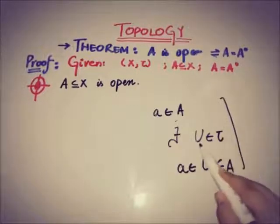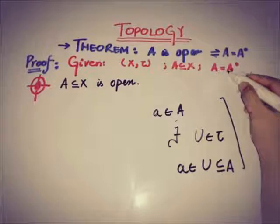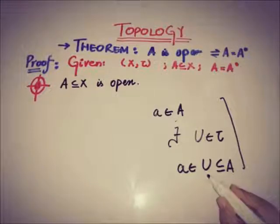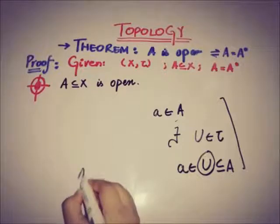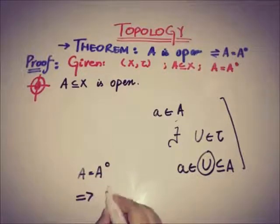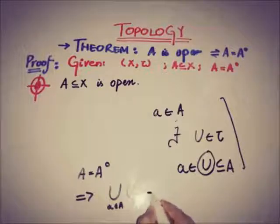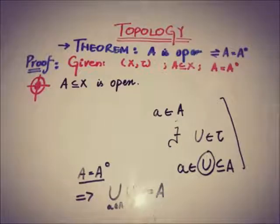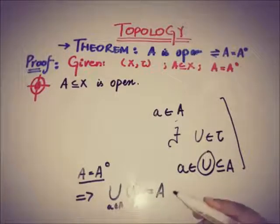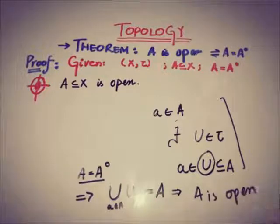Since A is said to be an interior point when there exists an open neighborhood U with U a subset of A containing point a, and given that A equals its interior, taking the union of all such open sets gives us A. This means A is the union of arbitrary open sets, and since the union of open sets is open, A is open.